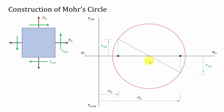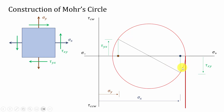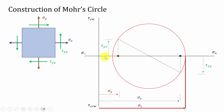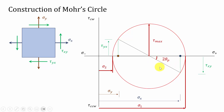Now we have constructed the Mohr circle. To evaluate the principal stress, I am rotating this plane to the horizontal direction. If I rotate this plane horizontally, this point will coincide with the Mohr circle, and this distance is the maximum principal stress, sigma 1. This horizontal line represents the principal plane — so I am rotating the current state of stress to a particular angle, and the horizontal line represents the principal stress. Similarly, on the left side of the circle we can find the value of sigma 2, and from the center we can evaluate the maximum shear stress. This angle is called the principal angle and its magnitude is 2θp, where θp is the principal angle.